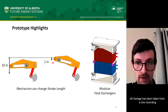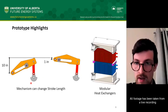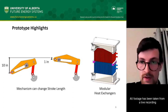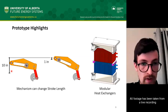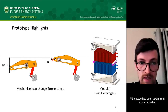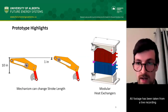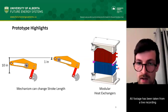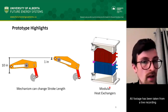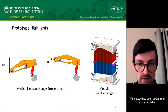The mechanism shown here on the left allows to change the stroke length by which the power piston moves, which allows to control the engine's compression ratio — an important operating parameter. Here you can see it with 10 inches of range of motion and one inch of motion, the difference being the location of its pivot point. The heat exchangers on the right are located in a separate module, as opposed to previous prototypes where they were integrated into the engine body, which allows to replace them and test different heat exchanger geometries on the same engine.